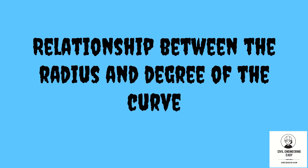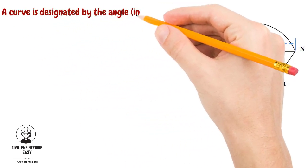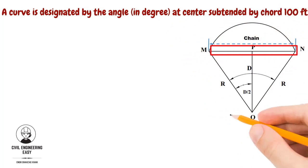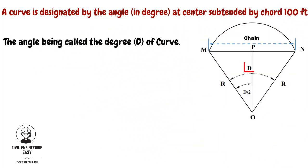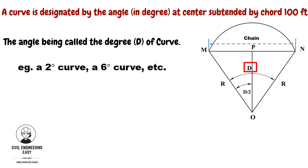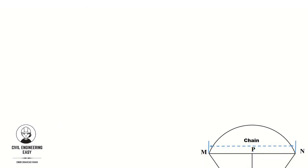Welcome back to my YouTube channel Civil Engineering Easy. Today I will derive a relationship between radius and degree of the curve, both for the engineer chain and metric chain. In America, a curve is designated by the angle at the center subtended by a chord of 100 feet long, the angle being called degree of the curve — for example, a two-degree curve, a six-degree curve, etc. This system is generally used in railway practice.